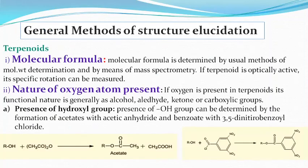General methods of structure elucidation. First of all, we determine the molecular formula of the compound by means of mass spectrometry and molecular weight determination. If the terpenoid is optically active, its specific rotation can be measured.